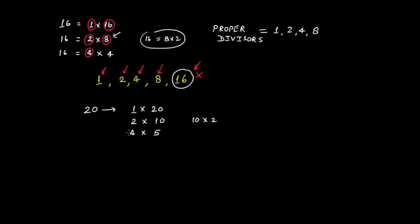So what are the factors of 20? The factors of 20 are 1, 20, 2, 10, 4 and 5. So the factors of 20 are 1, 2, 4, 5, 10 and 20.